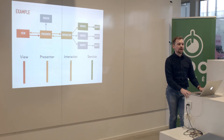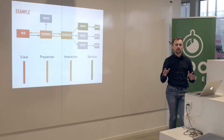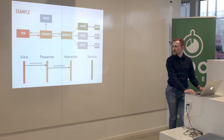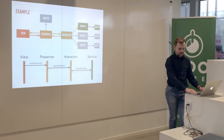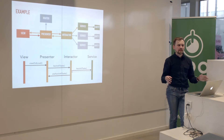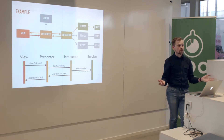Now that we know what the components of a VIPER module are, let's look at how they work together. When the view has just loaded, it receives the viewDidLoad lifecycle event and tells the presenter. The presenter asks the interactor to fetch the tasks. The interactor uses a service to actually do the fetching, then notifies the presenter that it completed. The presenter applies presentation logic, creates a view model from the task list, and asks the view to render it. As a result we have the list of tasks on screen.